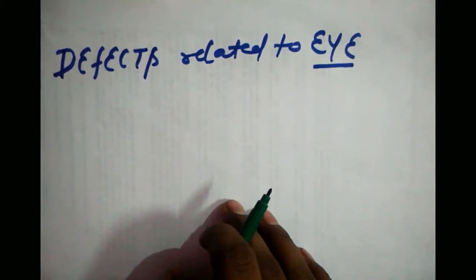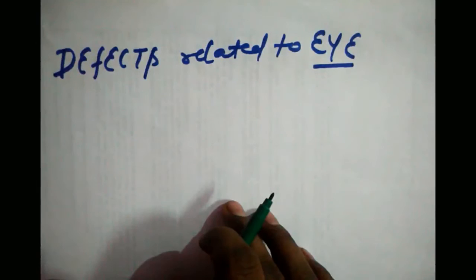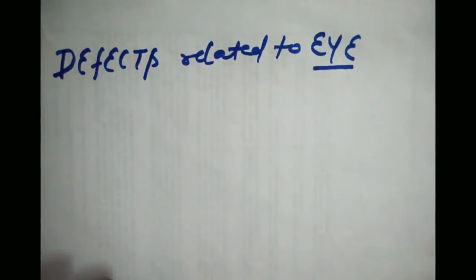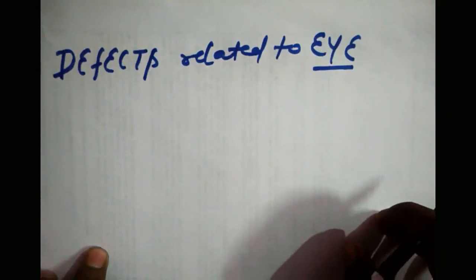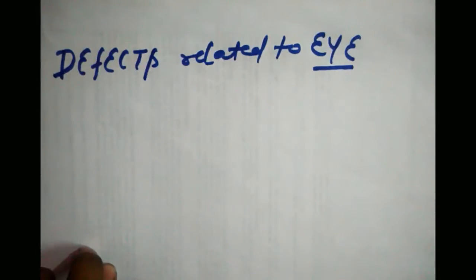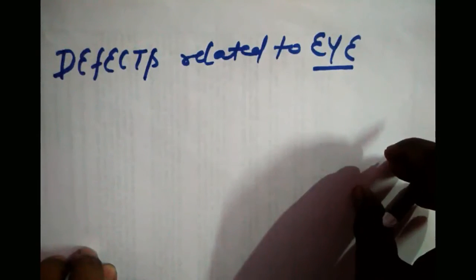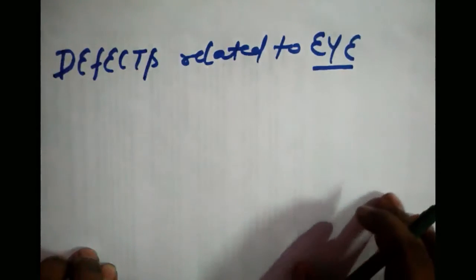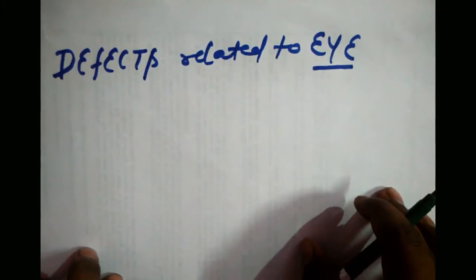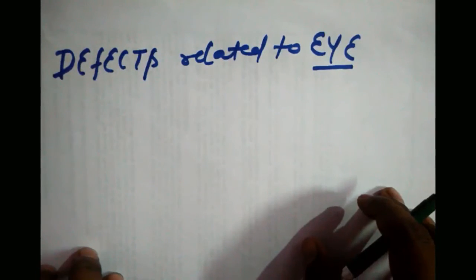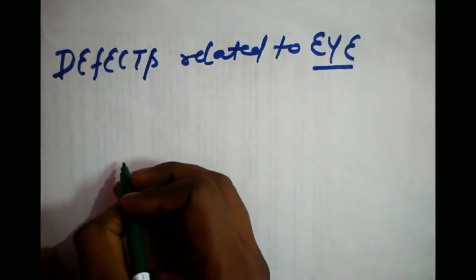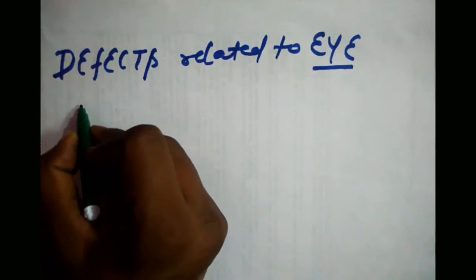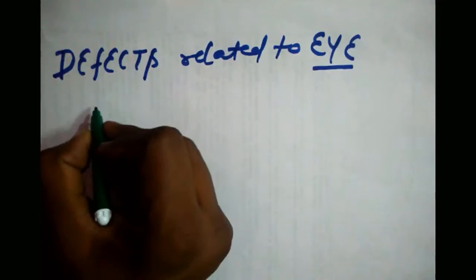Hi friends, in this video I am going to discuss the various defects related to the human eye — the various kinds of imperfections related to the human eye. The eye is the only part of our body by which we can see the beautiful world and enjoy the beauty of nature, but there are various kinds of defects which may lead to improper functioning of the eye, due to which we are unable to see the world properly.